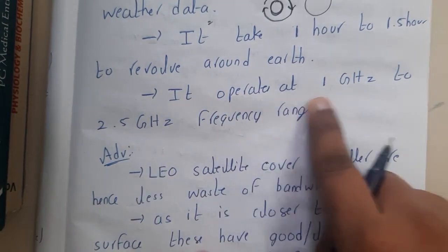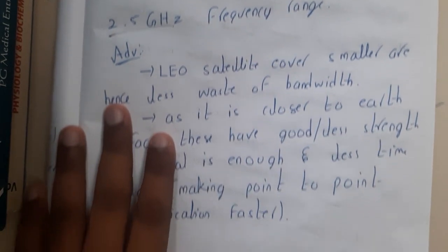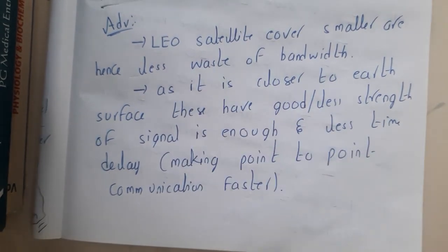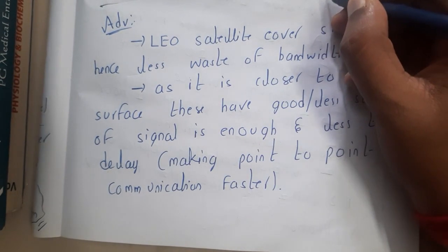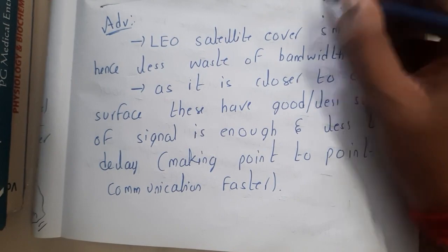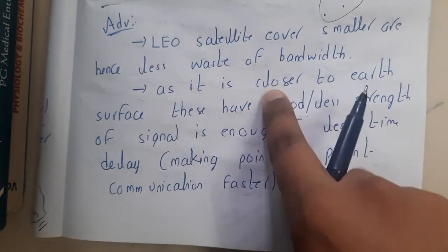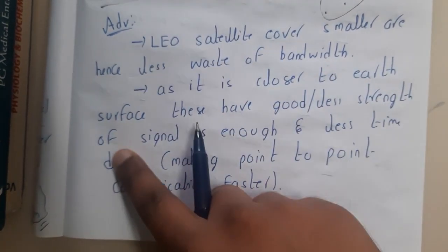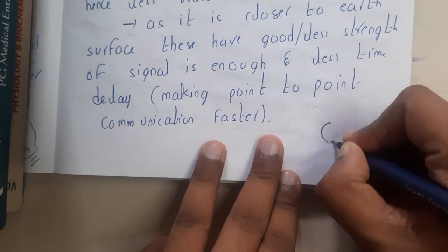LEO satellites operate at a frequency of 1 GHz to 2.5 GHz. The advantages are that they cover a small area, hence less waste of bandwidth. Being close to the earth surface, a good signal with less strength is enough, and there is less time delay.